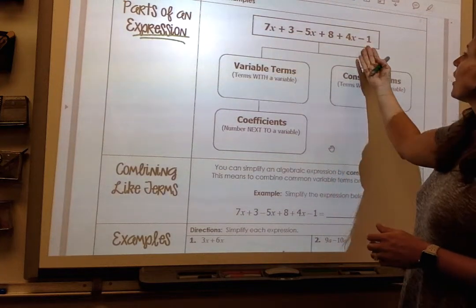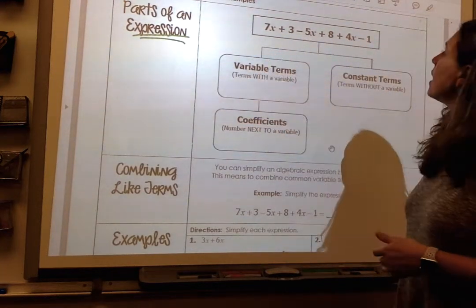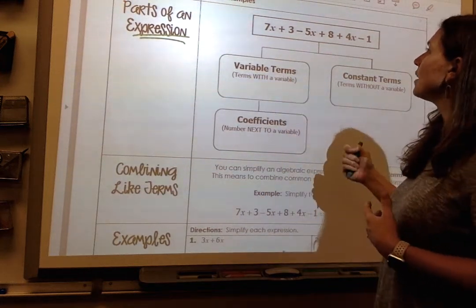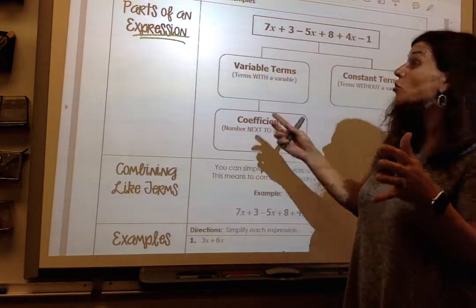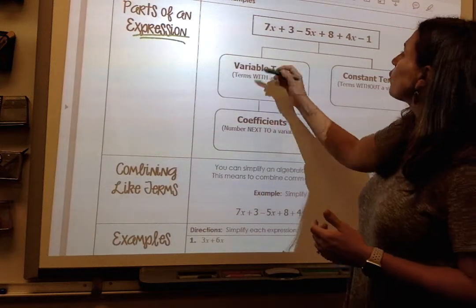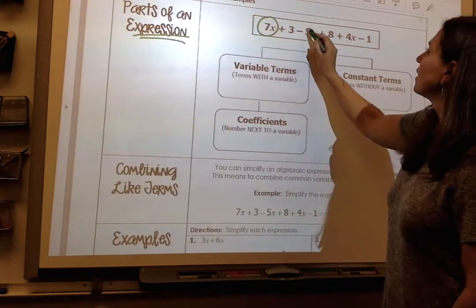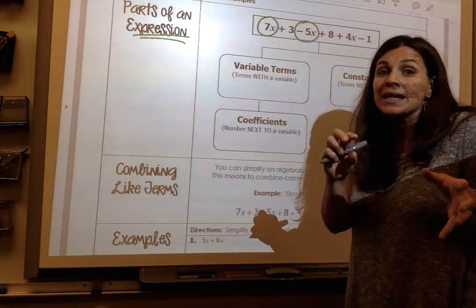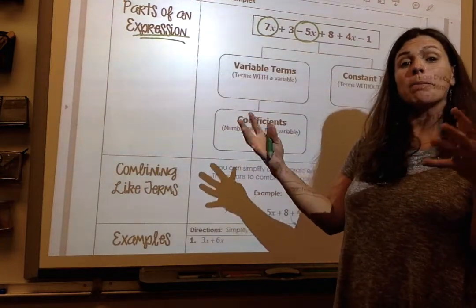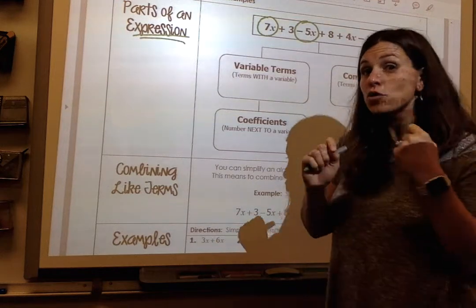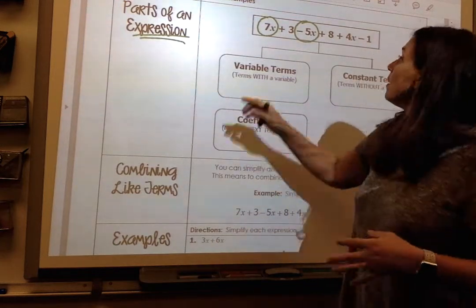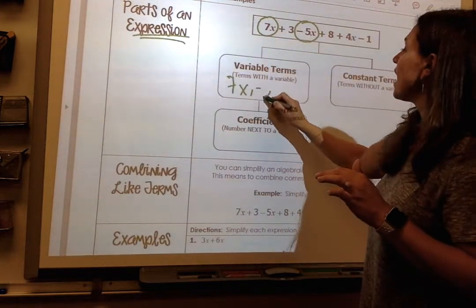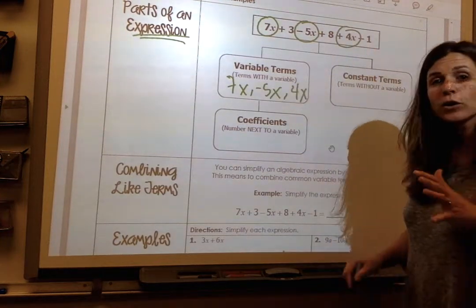When you have an expression like this, you've got numbers, you've got variables, and we can even break that down even further. So when you look at variable terms in this expression, variable terms are simple. They're just terms with a variable. So if I circle my variable terms, I'm going to circle 7x, negative 5x. Remember, I want you to get away from minus and addition. All we're doing now is we're combining terms. So you won't hear me say subtract. You're not going to hear me say add. This is really just a negative term. So I've got a 7x, I have a negative 5x, and I have a positive 4x. Those are my variable terms.